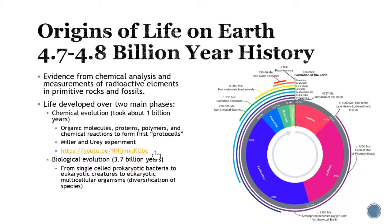Once we get all the chemical stuff taken care of, the first cell appears and we start to see the very first part of life — the prokaryotes. For a long time we just had these very simple organisms, just prokaryotes. Then they started going through photosynthesis, using the sun to generate energy, which began changing the atmosphere to become more oxygen-rich. When that happened, we start to see the first eukaryotes form, getting more complex organisms.